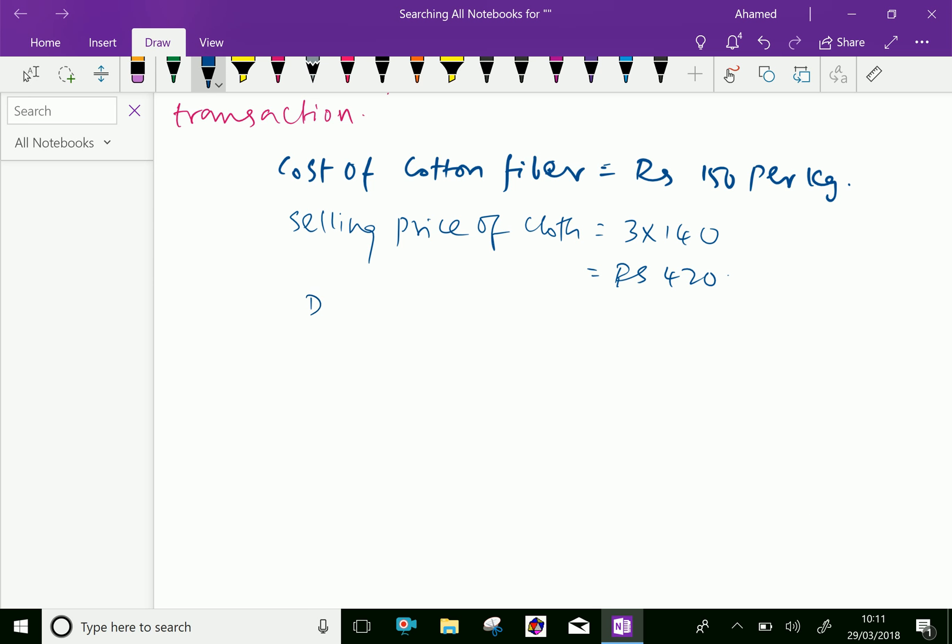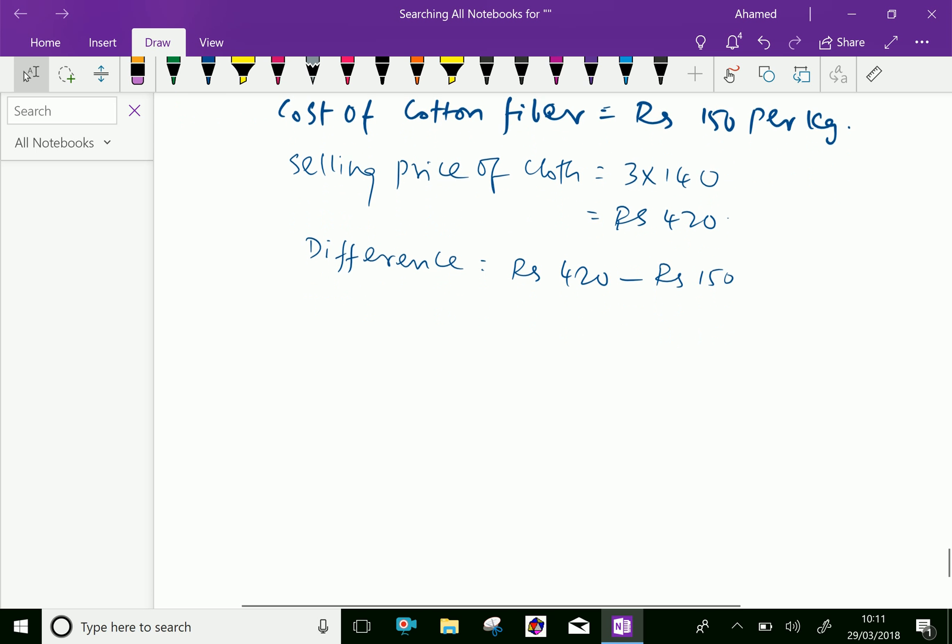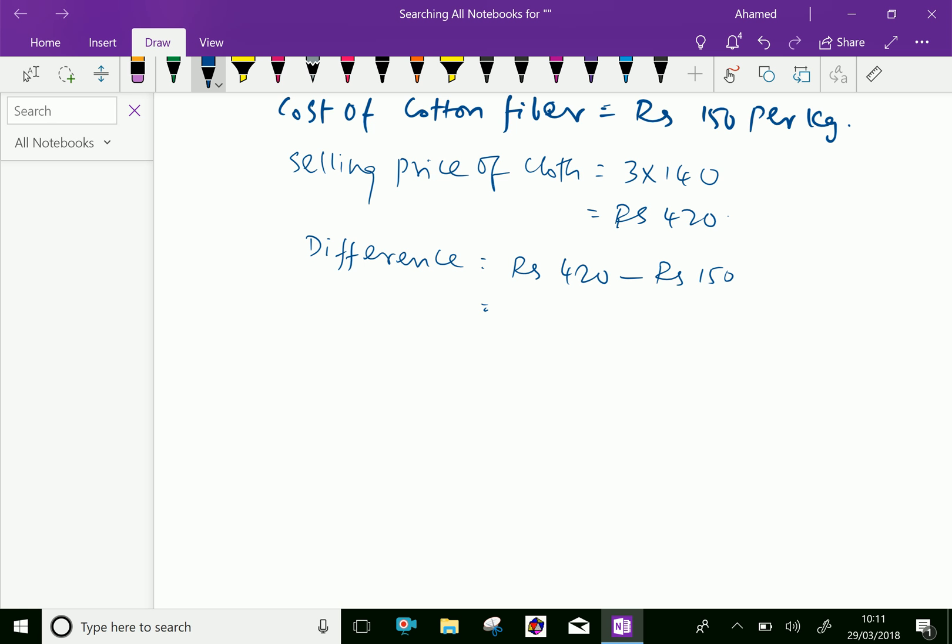Now, difference equal 420, Rs. 420 minus Rs. 150, equal 420 minus 150, equal 270.